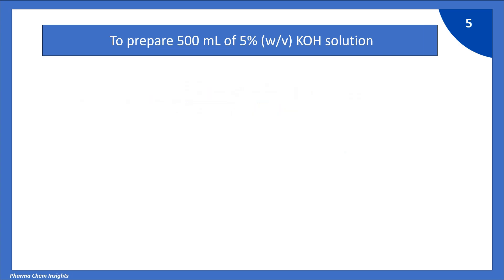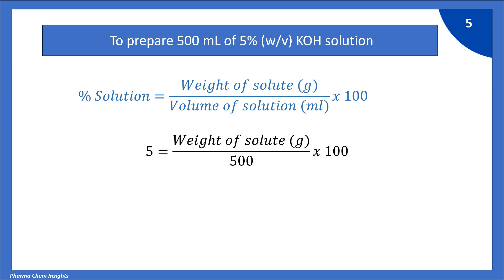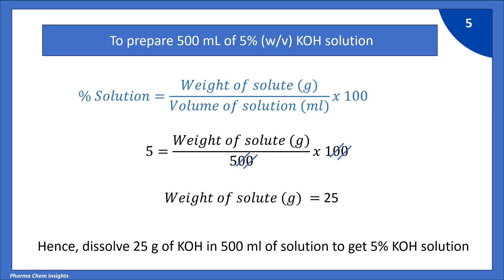To prepare 500 ml of 5% weight by volume KOH solution — in this example, we have changed the volume. Note that the volume of solution can be adjusted as per your requirement. By the formula, putting in the values: 5 equals weight of solute divided by 500, into 100. By calculating, we get weight of solute equal to 25 grams. Hence, dissolve 25 grams of KOH in 500 ml of solution to get 5% KOH solution.